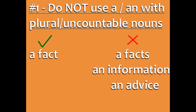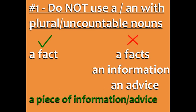For example, 'a fact' is correct because 'fact' is singular, but you can't say 'a facts' because 'facts' is plural. 'An information' and 'an advice' are also incorrect because information and advice are uncountable nouns. However, you can say 'a piece of information' or 'a piece of advice.'